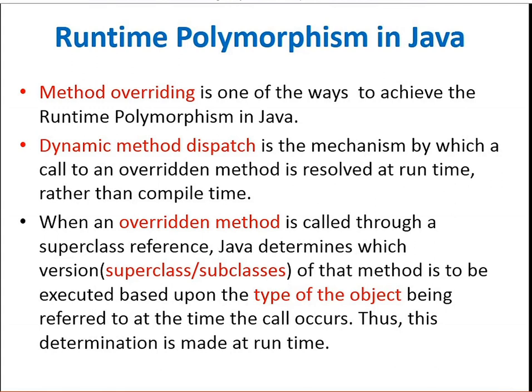Method overriding is one of the most important concepts in Java to achieve runtime polymorphism. Dynamic method dispatch is the mechanism by which a call to an overridden method is resolved at runtime rather than compile time.